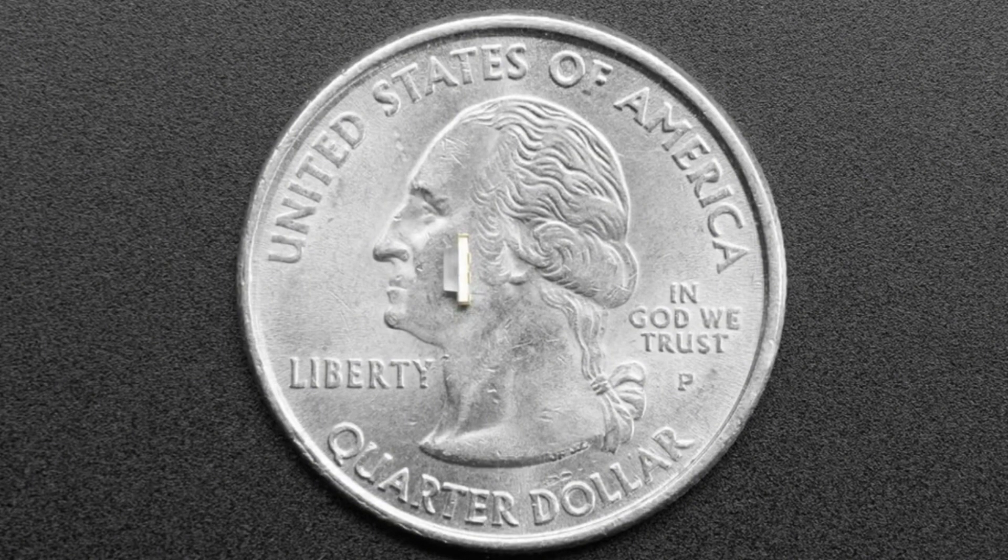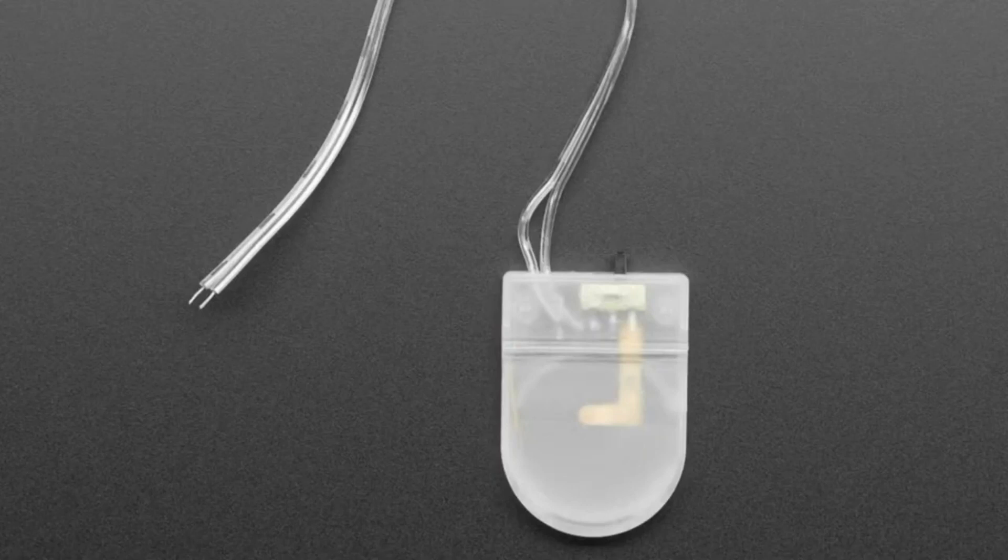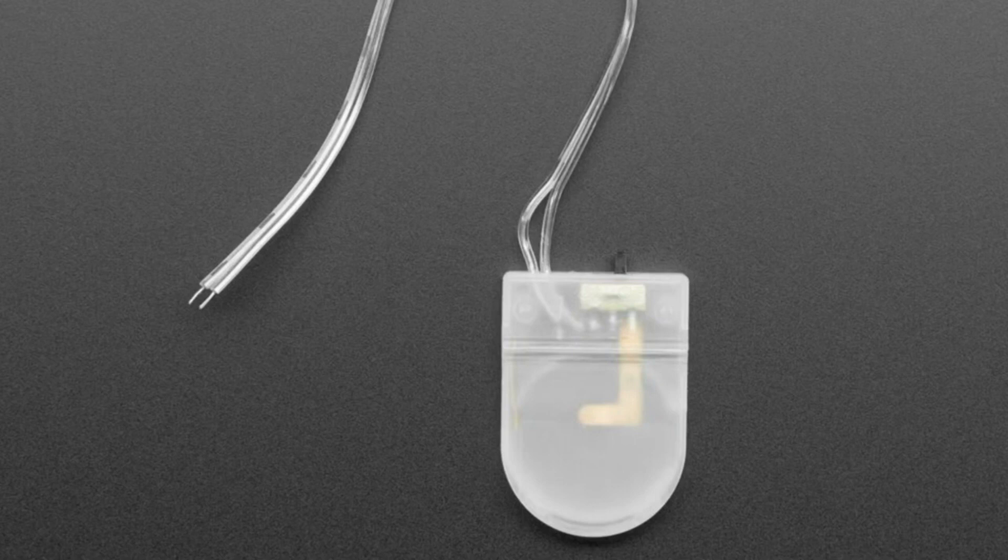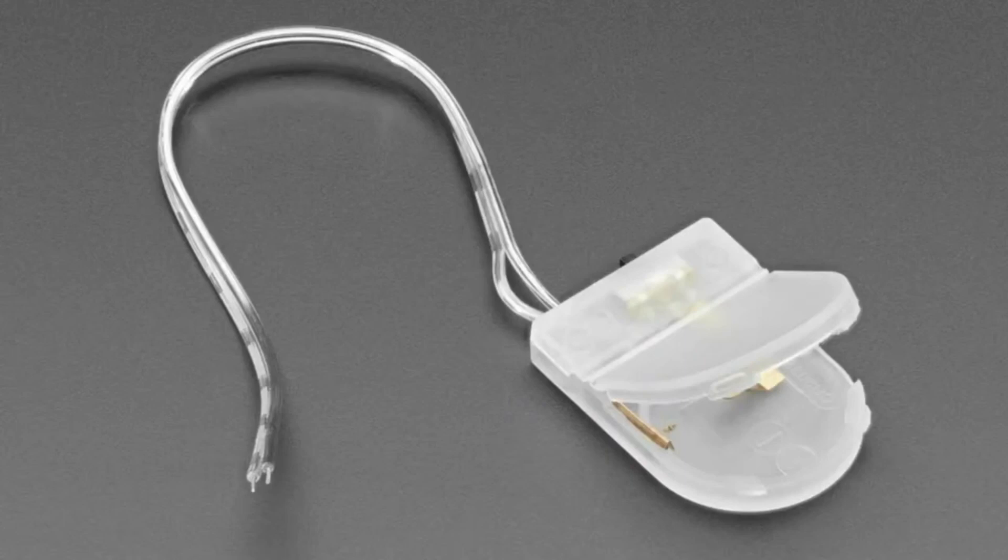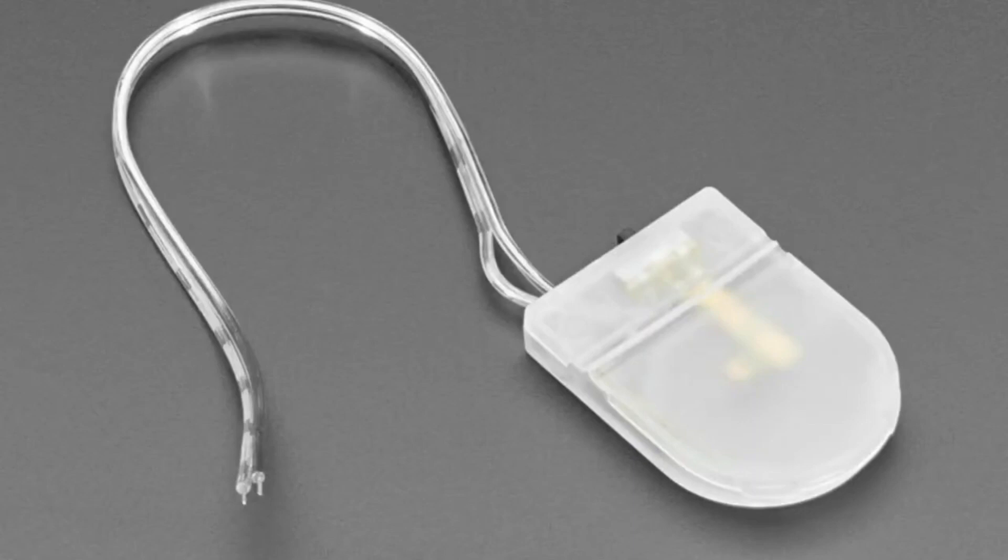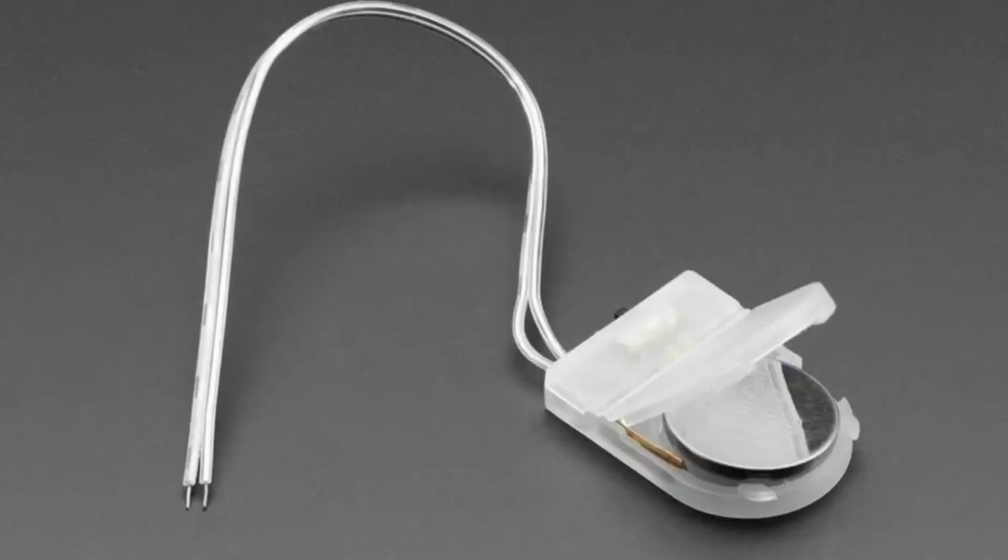Next up, a single coin cell battery holder. This little clear snap fit case can hold a single CR2032 three volt coin battery. We already have a similar thing in the store that has two coin batteries for six volts total. This one is three volts. You just pop it open, put in the coin battery as shown here, snap it closed.